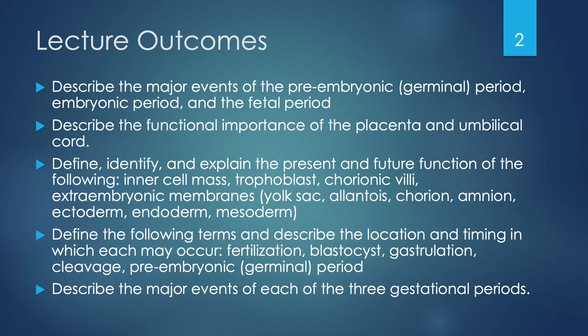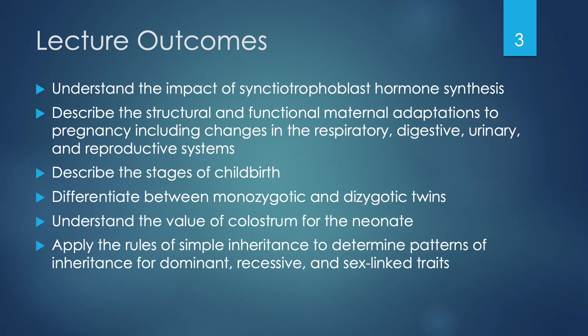Additional outcomes include: to define the following terms and describe the location and timing — fertilization, blastocyst, gastrulation, cleavage, and the pre-embryonic or germinal period; to describe the major events of each of the three gestational periods; to understand the impact of syncytiotrophoblast hormone synthesis; to describe the structural and functional maternal adaptations to pregnancy, including changes in the respiratory, digestive, urinary, and reproductive systems; to describe the stages of childbirth; and to differentiate between monozygotic and dizygotic twins; and to understand the value of colostrum for the neonate.